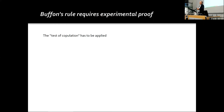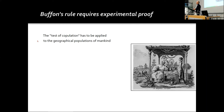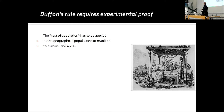The test of population, in the context of anthropology, has to be applied to the geographical populations of mankind. This took place after the discovery of the different continents. The Europeans came to America, Australia, and elsewhere, and effectively made this test of population — and it obviously worked. So the varieties that exist today are obviously one species. But the real problem is that it must also be applied to humans and apes. To know if humans and chimpanzees are one species or different species, we would have to make the test of population.